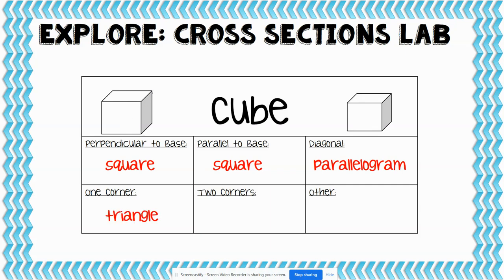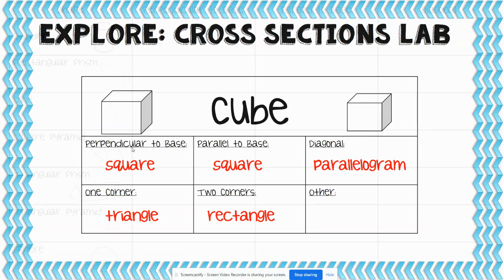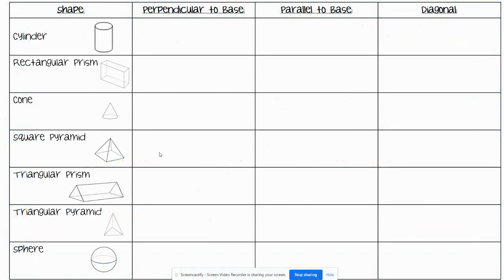If you cut all the way through two corners, you're going to get a rectangle. You could have found any other shape that you wanted. If you cut a cylinder perpendicular to its base, which means cutting it all the way straight down and looking at what's left inside, you would get a rectangle.